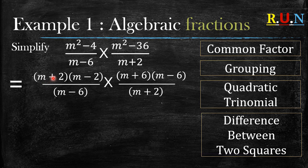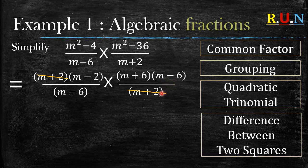Now let's start with the bracket m plus 2 in the numerator — is there another m plus 2 in the denominator? Yes there is, so we cancel out the one in the numerator and the one in the denominator. We move on to m minus 2 — is there another m minus 2? No, so we move on. m plus 6 — is there m plus 6 in the denominator? No. Then m minus 6 — is there m minus 6 in the denominator? Yes, so we cancel out that m minus 6 in the numerator and the m minus 6 in the denominator.